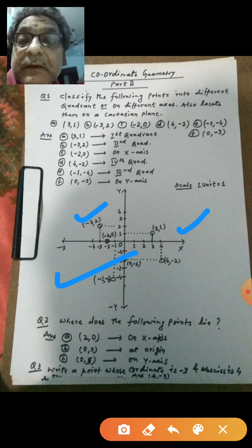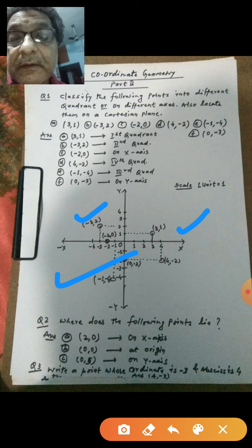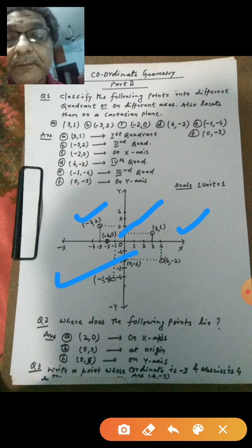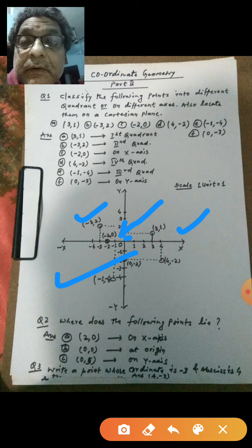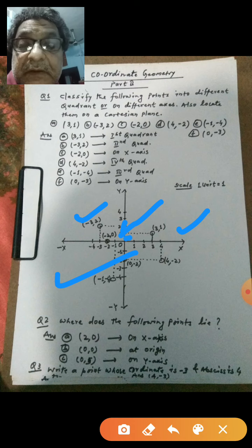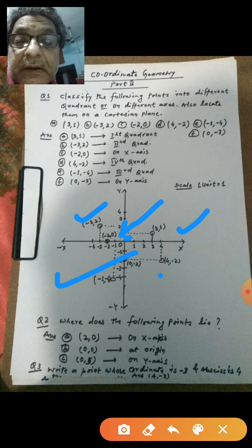So x is minus 3 and y is 2, so see here this one. Next is minus 2 comma 0, which is on x-axis. So we will search minus 2 on x-axis and y is 0, so point will come on x-axis. So I am showing here, point is this one. Now next point is 4 comma minus 2. X is 4, that is related to fourth quadrant.